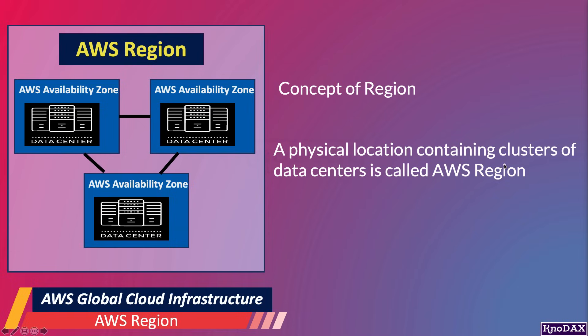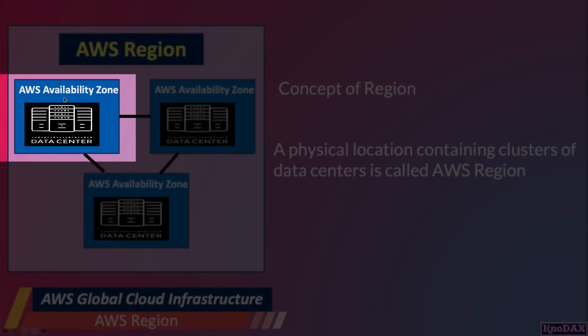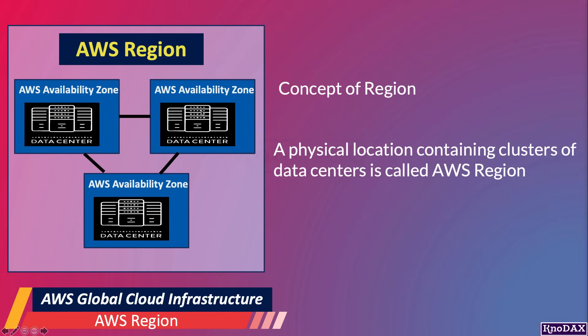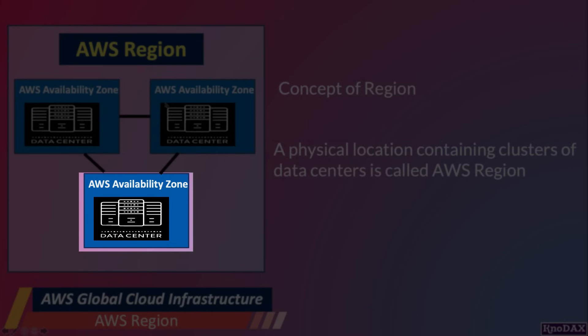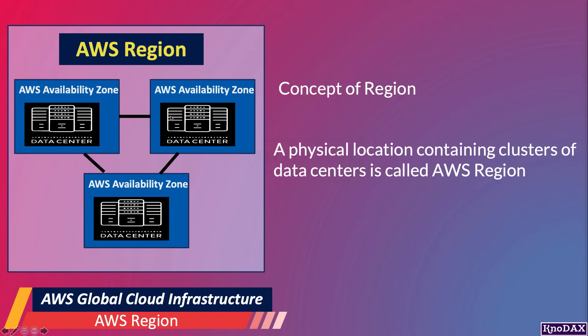As you can see in this diagram, this AWS region has three clusters of data centers — one cluster here, the second cluster of the data center here, and the third cluster here. These clusters of data centers are interconnected.